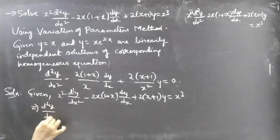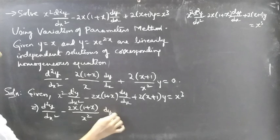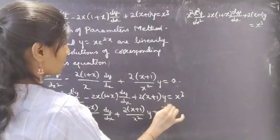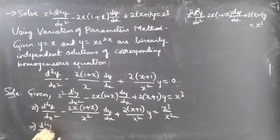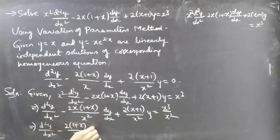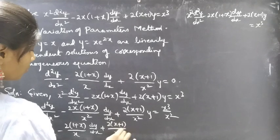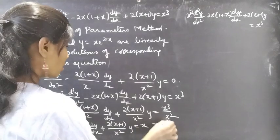Dividing through by x² gives: d²y/dx² minus 2(1+x)/x · dy/dx plus 2(x+1)/x² · y = x. Consider this as equation number 1.